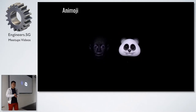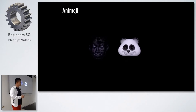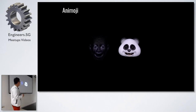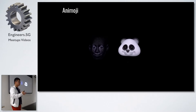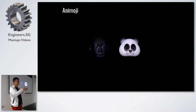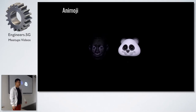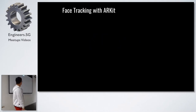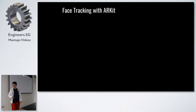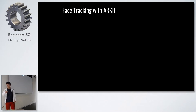The TrueDepth camera also gave us a new feature called Animoji, whereby our facial movements can be tracked and projected onto another object — in this case, a cute little panda. Apple has also improved ARKit to enable face tracking, giving us four new capabilities to play around with.